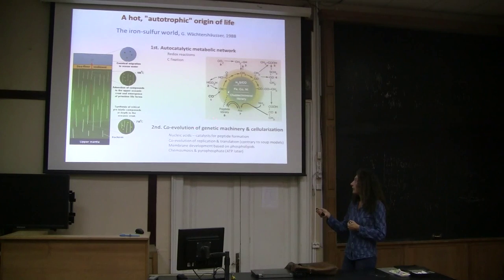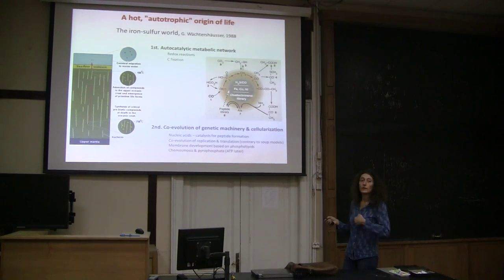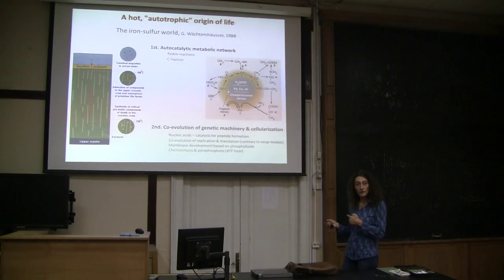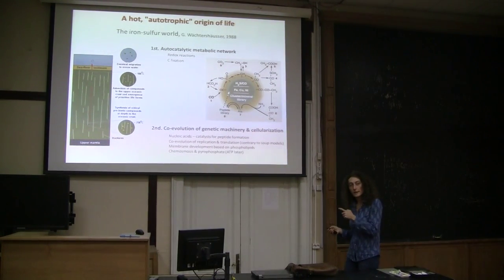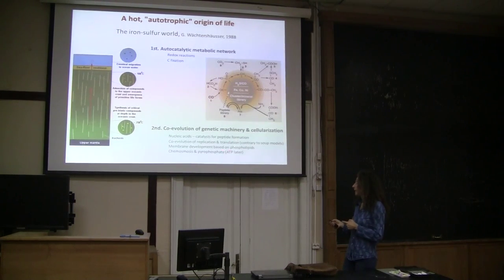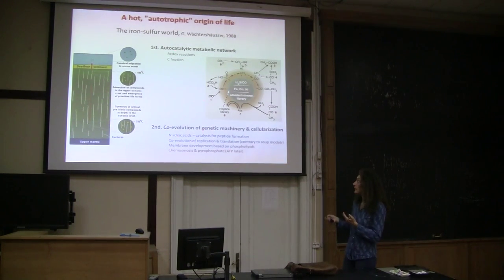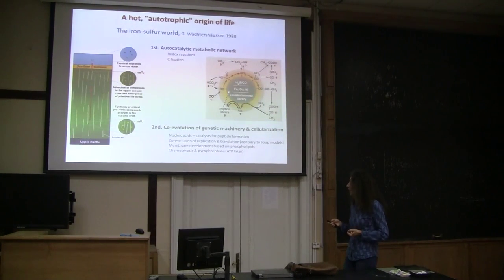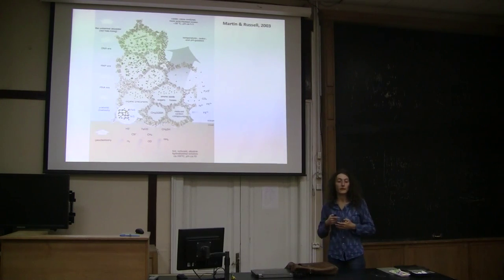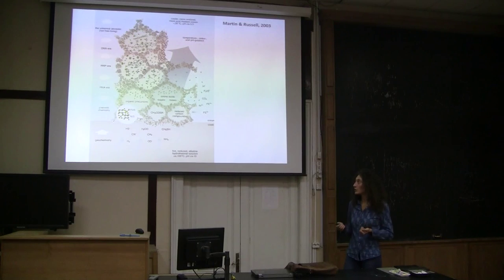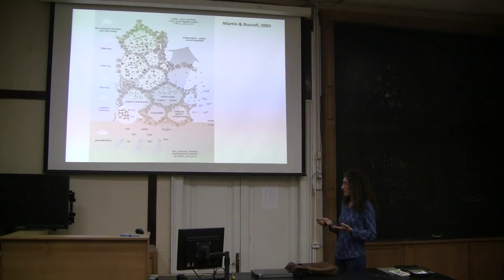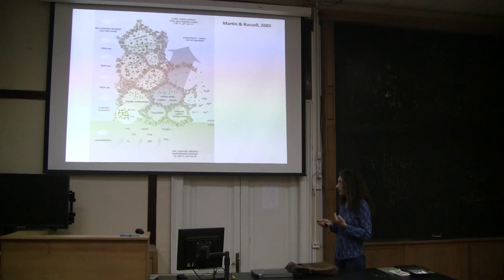So the autotrophic property, the capacity to fix inorganic carbon, CO2 into organic matter, would be the first metabolic capacity of this system that he would call alive. And only later there would be the addition of the genetic machinery. And in his view, nucleic acids appear first for their catalytic capacity to make peptide bonds. So in this sense, it is the opposite than the other model.